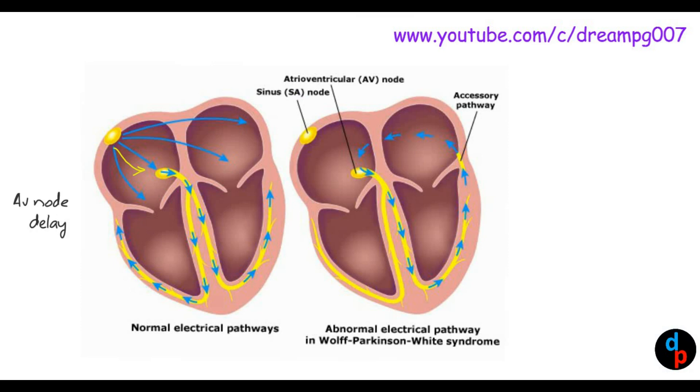Whereas in Wolff-Parkinson-White syndrome, the impulses travel via an accessory pathway called Bundle of Kent to the ventricle. So the impulse reaches the ventricle rapidly without any delay, which can lead to tachyarrhythmia.